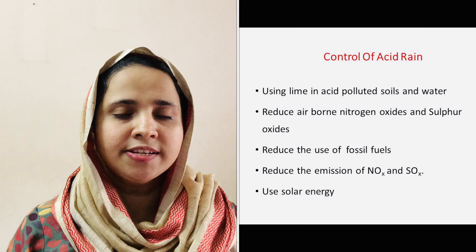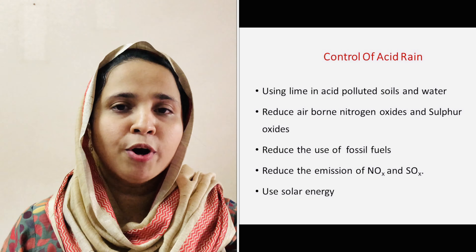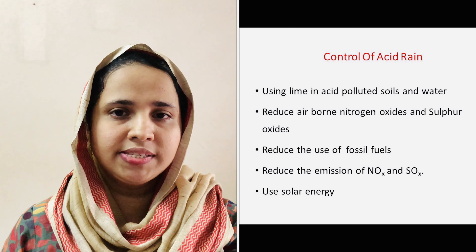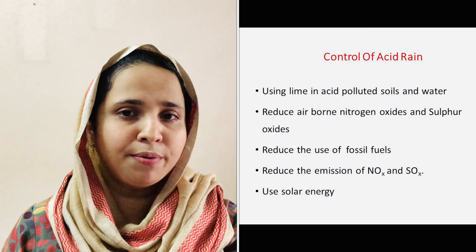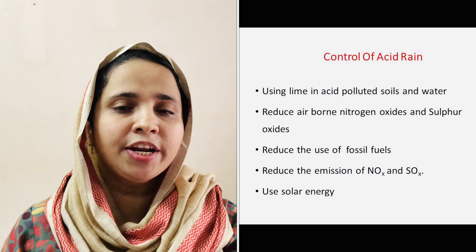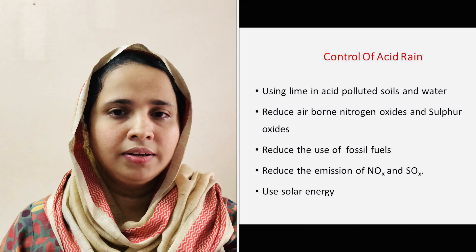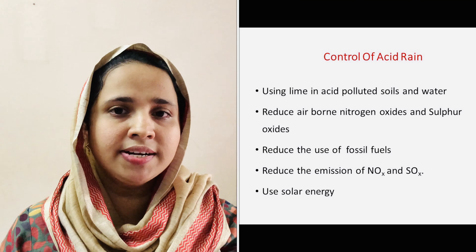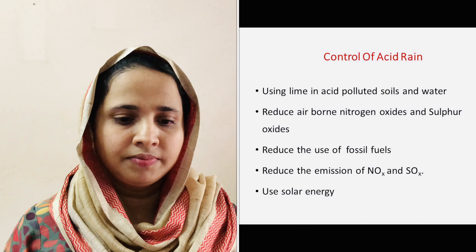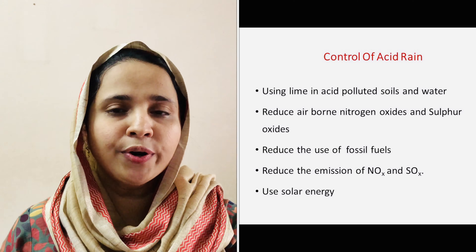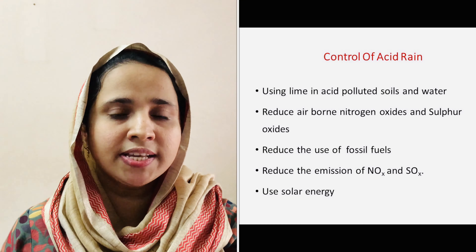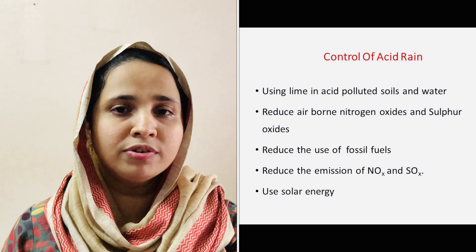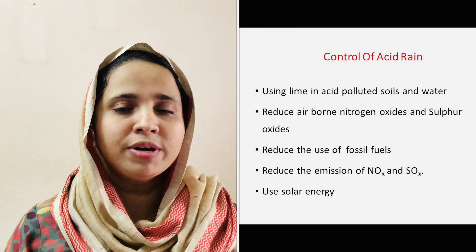To control acid rain, the short-term control of acid deposition can be achieved by using lime in acid-polluted soils and fresh water bodies. However, this only decreases the acidity and is not a permanent solution. The only remedy to prevent acid rain is to reduce the formation of nitrogen oxides and sulfur oxides. This needs basic changes in the pattern of using fossil fuels, reduced emission of these oxides into the atmosphere, and use of solar energy wherever possible instead of fossil fuels.